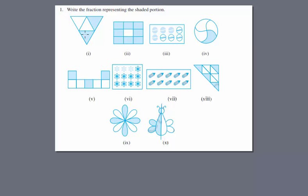In the first question we have two shaded portions out of four, so we write two over four. In the second question we have one two three four five six seven eight.